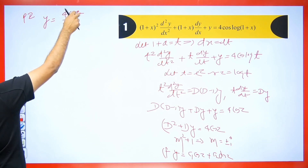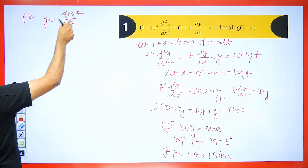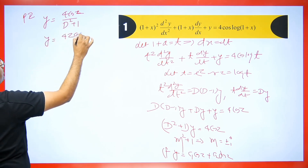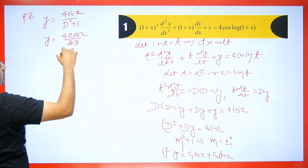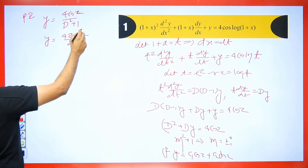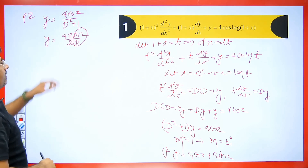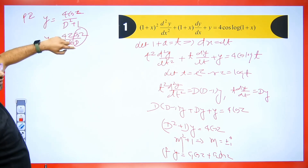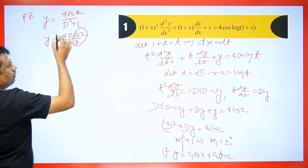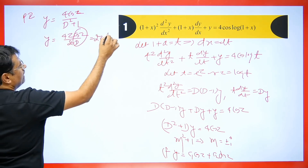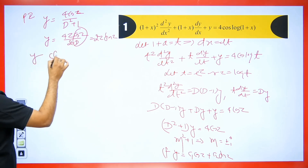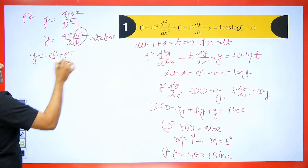Whenever the denominator becomes 0, we multiply the numerator by z and differentiate the denominator — the derivative of d² is 2d. We integrate: (1/d) of cos z gives sin z, and the 2s cancel. So the PI is 2z sin z. The final answer is CF + PI: y = c₁ cos z + c₂ sin z + 2z sin z.